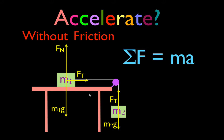The forces acting on M2 are just two: the weight and the tension force. Of all five forces acting on both objects, let's see which ones affect the acceleration. M1 moves to the right, so the normal force and the weight of M1 act along the y-axis and do not affect the acceleration — we can ignore those two forces. That leaves the tension force.